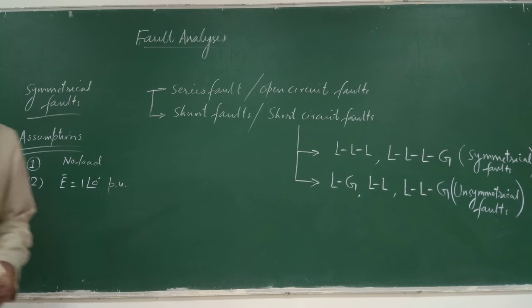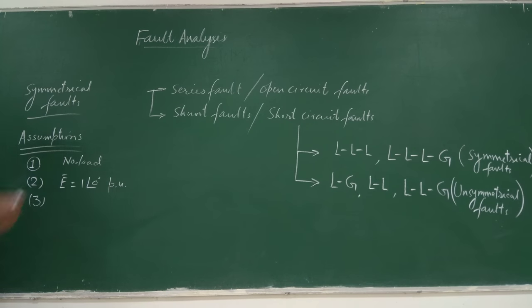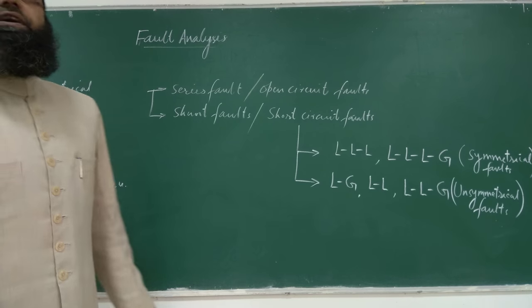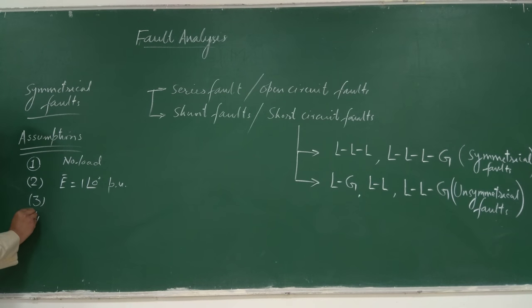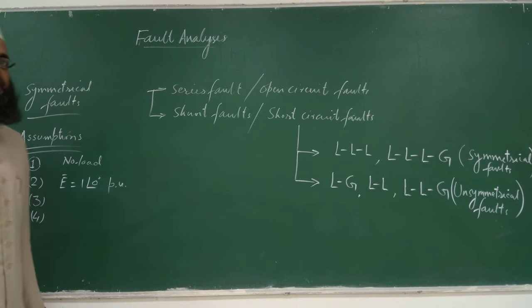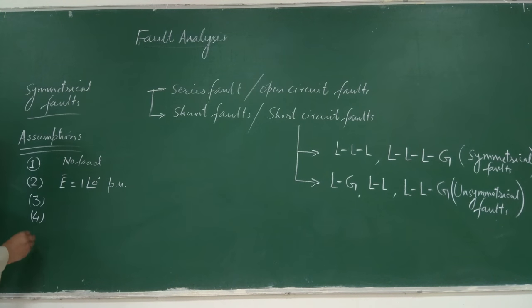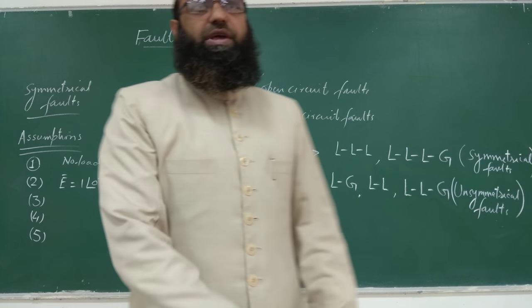The second assumption is that all EMFs of the generators in the system are operating at one per unit, that is, E = 1∠0 per unit. Since the system is at no load, there is no drop, so whatever EMF is induced per phase, the same will be everywhere. Third, all transformers are represented by their leakage reactances only. For transmission lines, resistances and shunt capacitances are neglected — in general, all resistances in the system are neglected and only inductive reactances are considered.